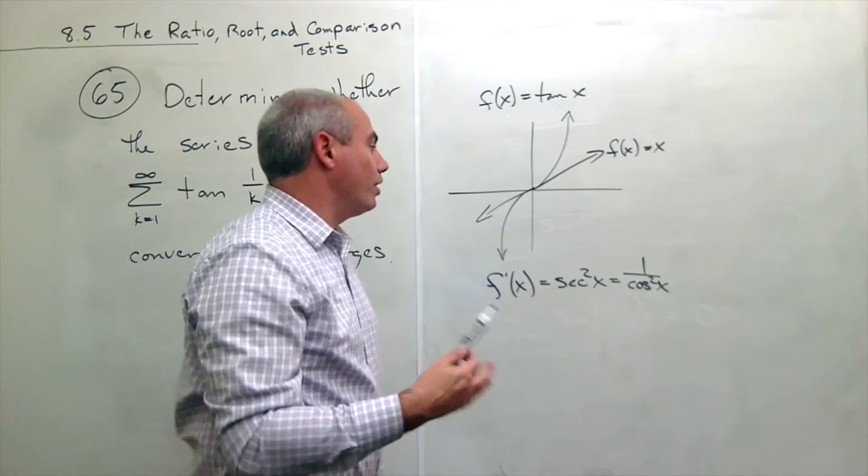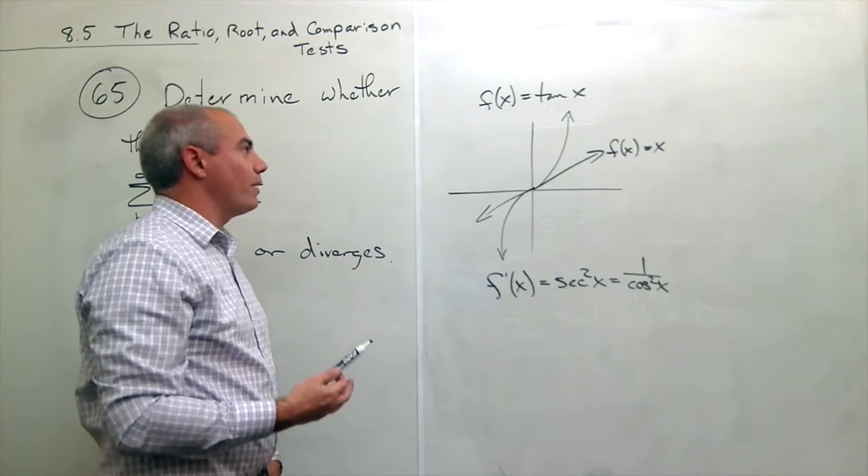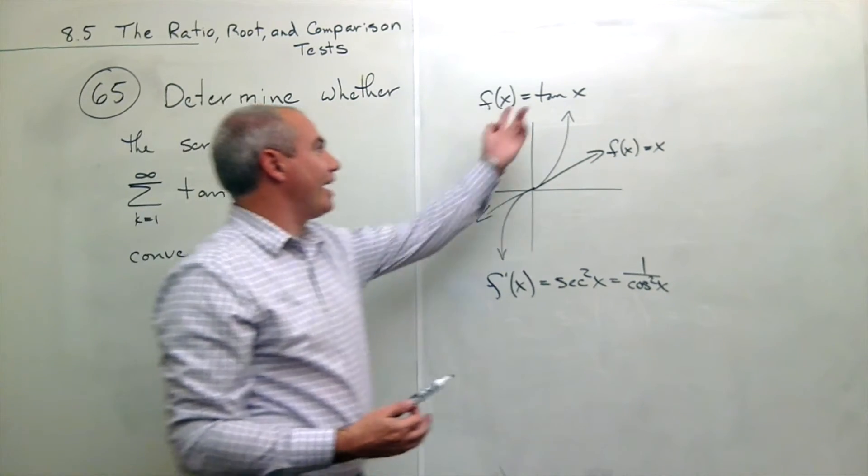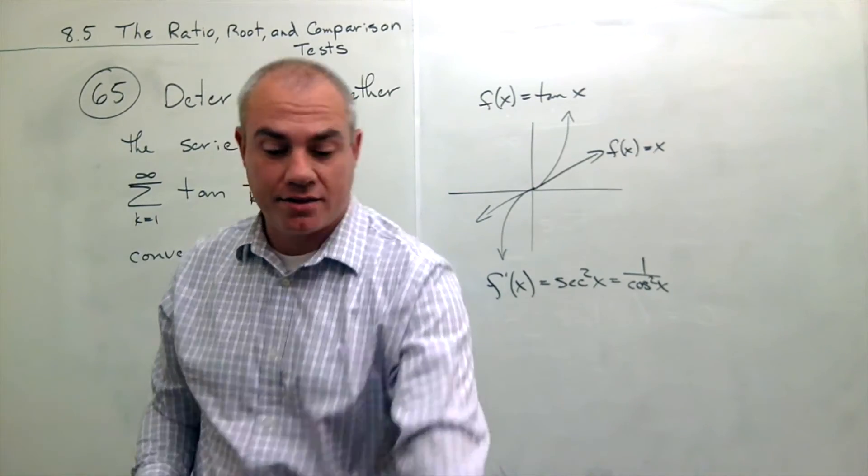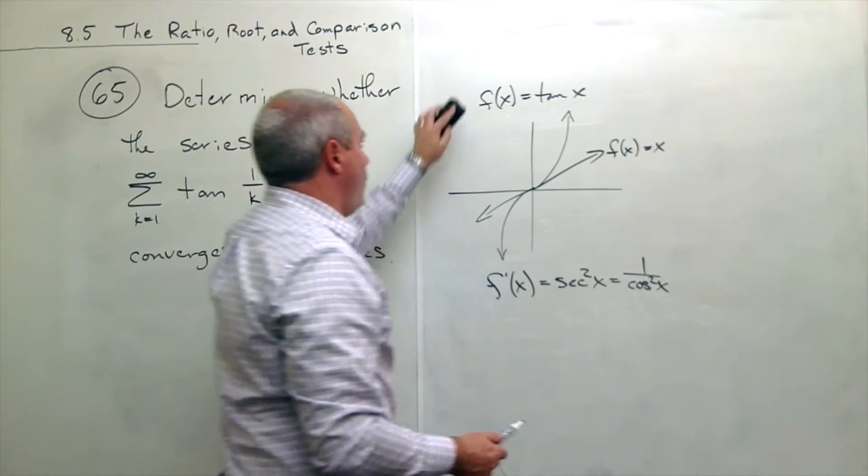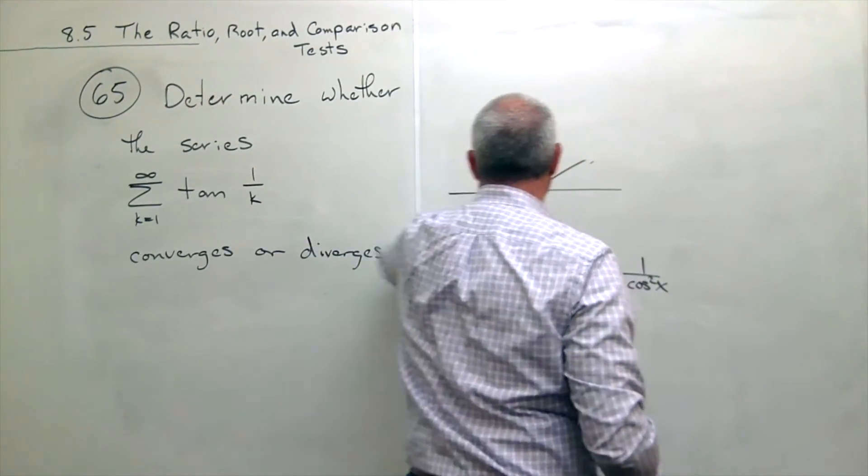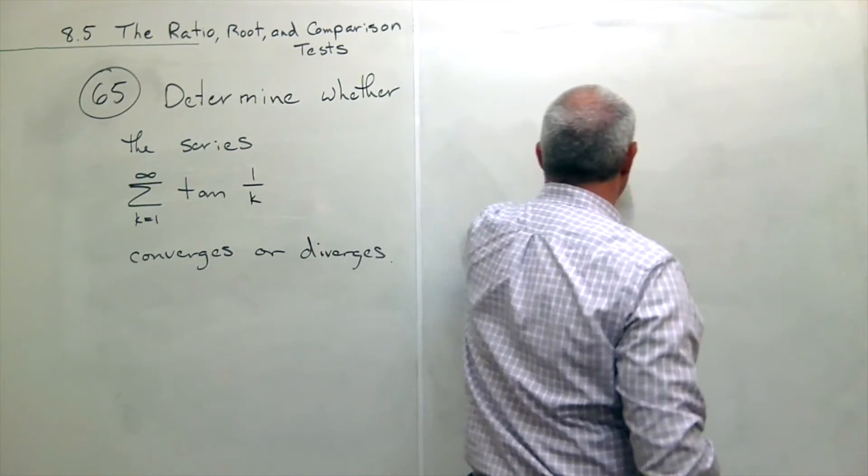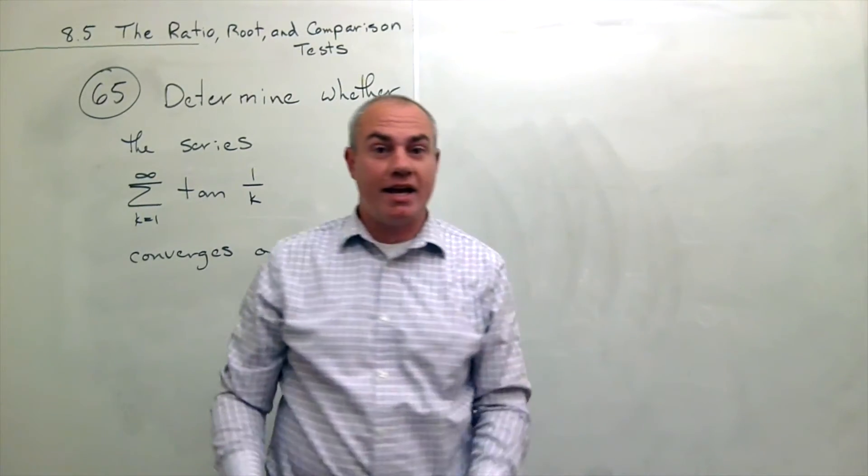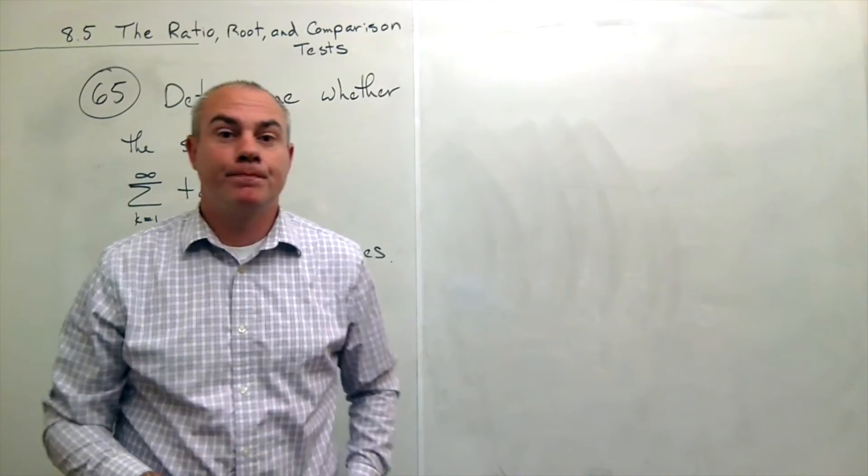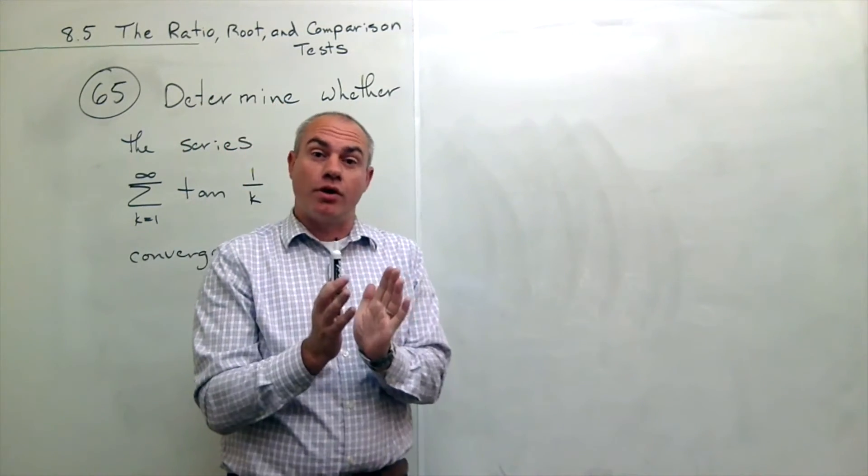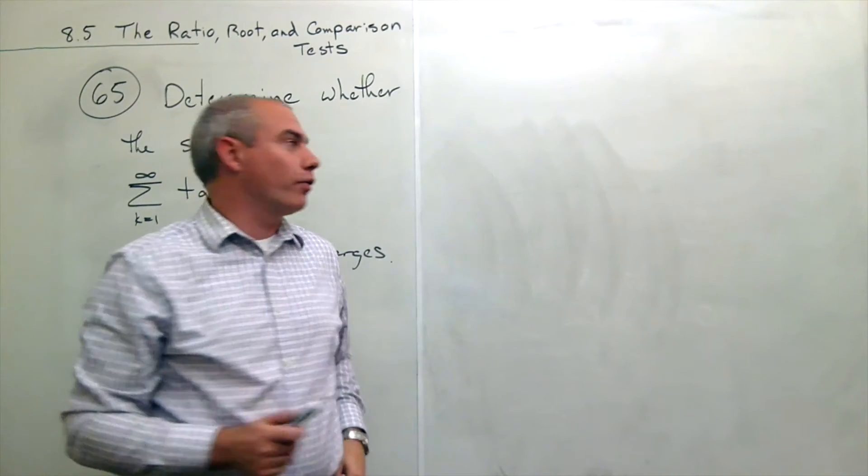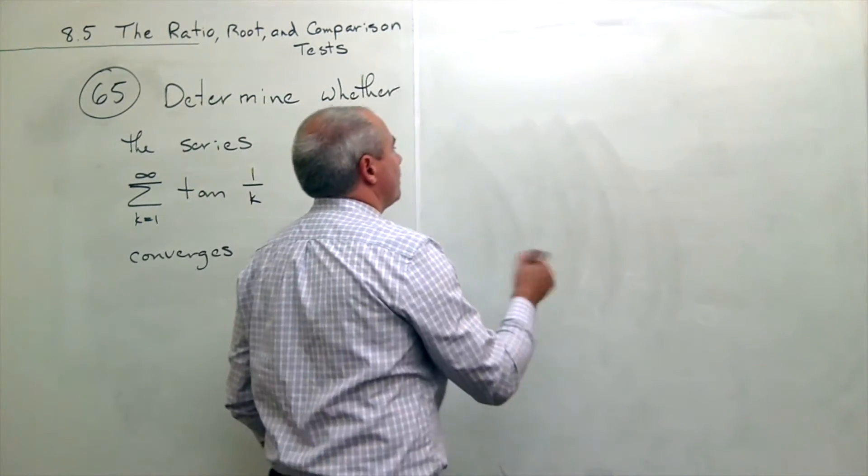I wonder if that is helpful to me in any way in this problem, that tan x is bigger than x. I think it is. Let me show you why. So now that we've established in our own minds that tan x is in fact a bigger quantity than x, when I'm close to the origin, just to the right of the origin, then I can say the following also.